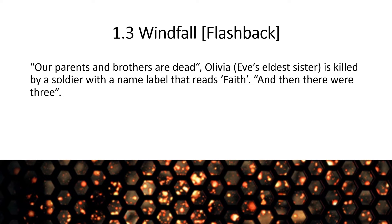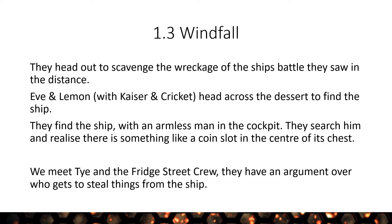Heading out — but first another flashback: parents and brothers are dead, and Olivia, thought to be Eve's older sister, is killed by a soldier with a name label reading Faith. The quote is 'and then there were three.' Then Eve, Lemon, Kaisa, and Cricket chase out into the desert to find the remains of a ship shot down in the distance, taking their weapons and worrying about bandits. They find the ship — there's a man with no arm in the cockpit, and a very strange coin slot in the centre of his chest. They take the body. Ty and the Fridge Street Gang turn up and argue over whose ship it is to salvage.